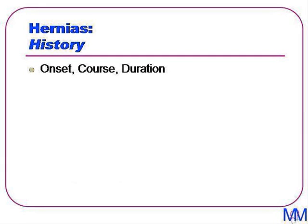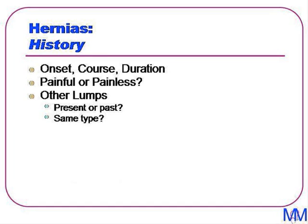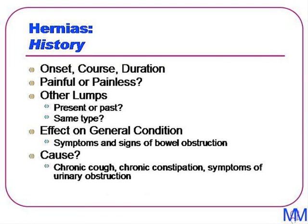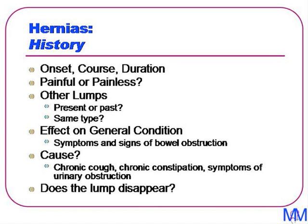On to the points needed in taking a history of a hernia. It is very much like taking a history of any swelling: we need to establish the onset, course and duration, whether it's painful or painless, and if it is painful, we want to know about the SOCRATES of pain. We want to know if there are any other lumps past or present and the effect of the hernia on their general condition, especially asking about signs of bowel obstruction such as episodes of vomiting or constipation. We also want to establish a cause for the hernia — have they had a chronic cough, do they have COPD, are they constipated, or do they have any symptoms of urinary obstruction? These are all causes for high intra-abdominal pressure. We also want to know if the lump disappears, as this gives us an idea of whether it is at risk of strangulating and obstructing.